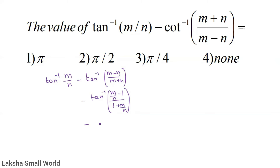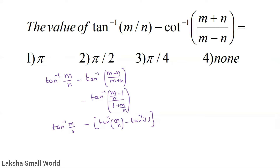The total expression tan⁻¹(a) − tan⁻¹(a) terms cancel out, and we are left with plus tan⁻¹(1). Since tan⁻¹(1) = π/4, the answer is π/4. The third option is correct.